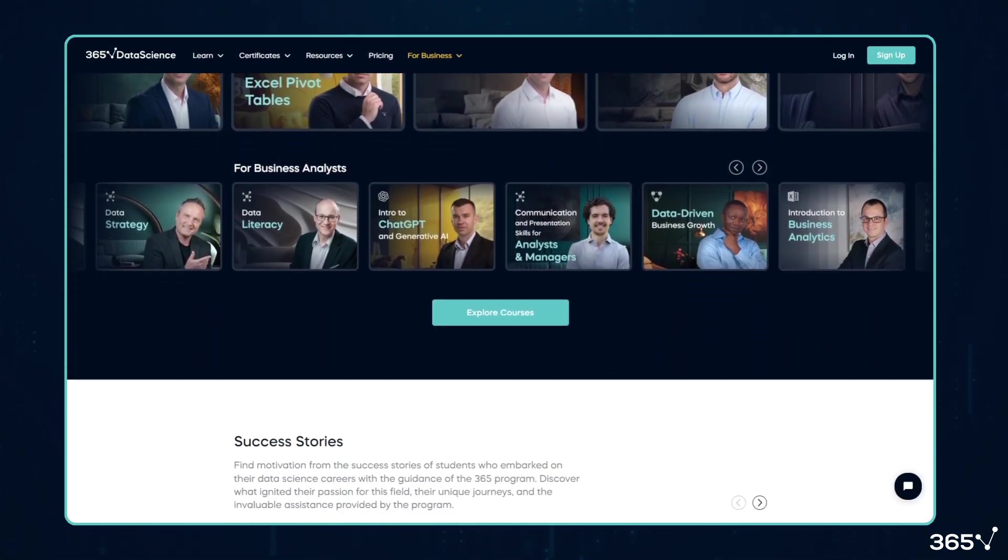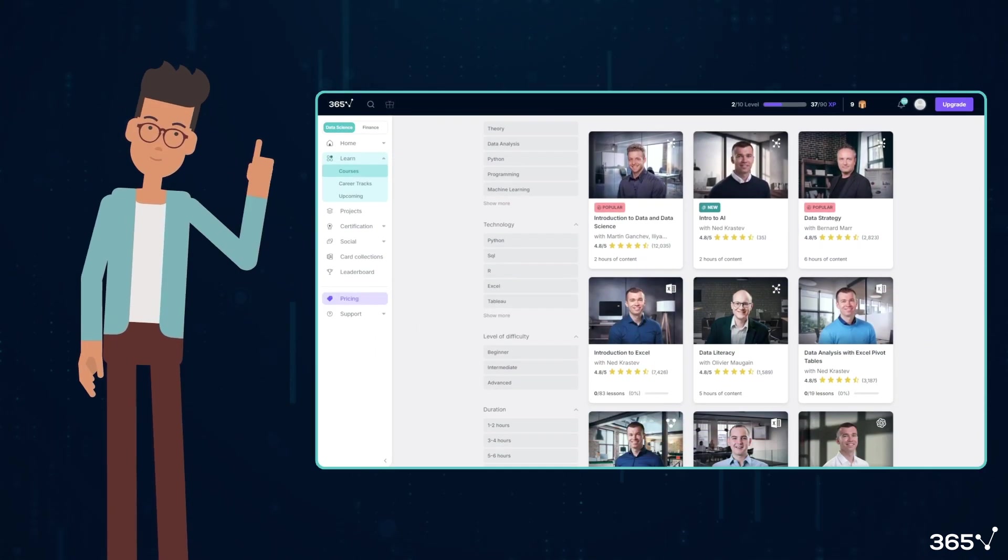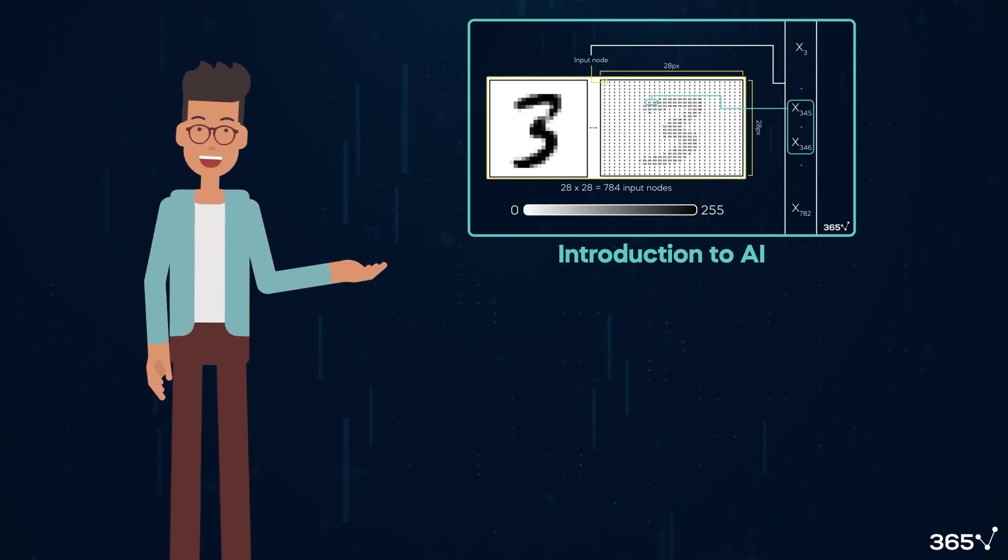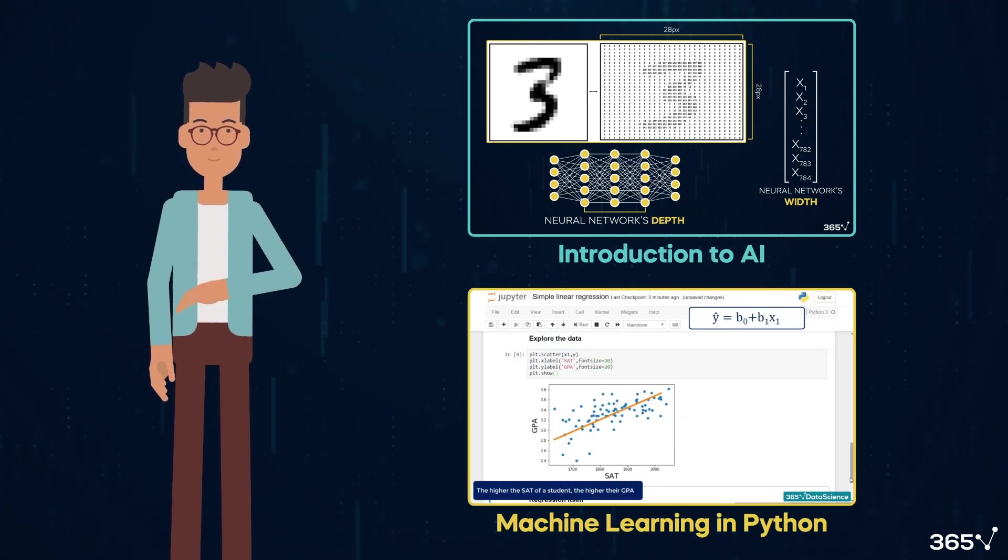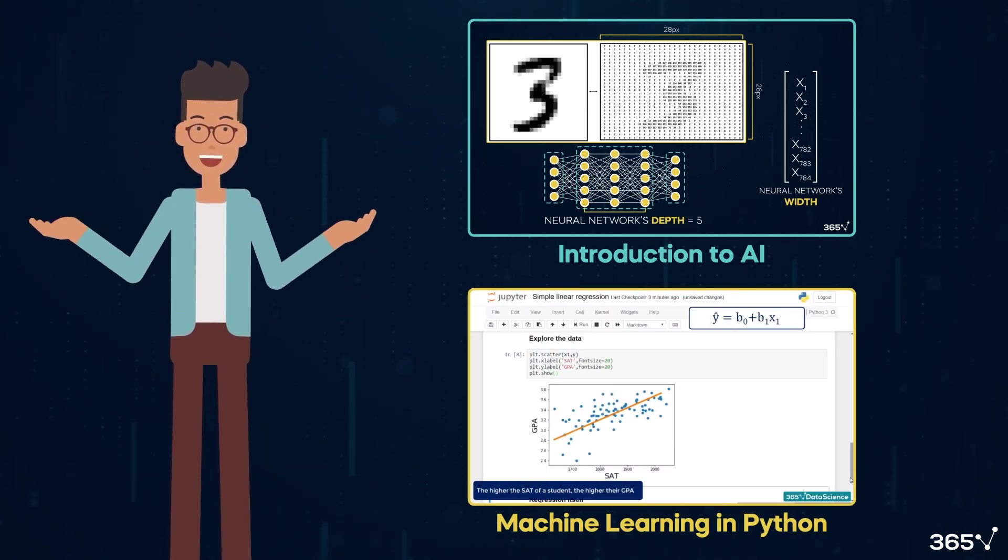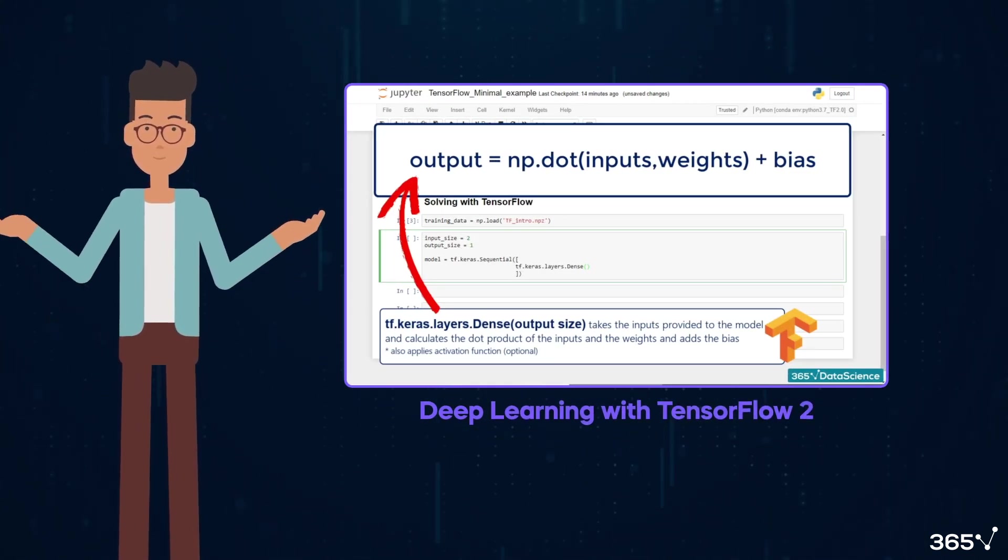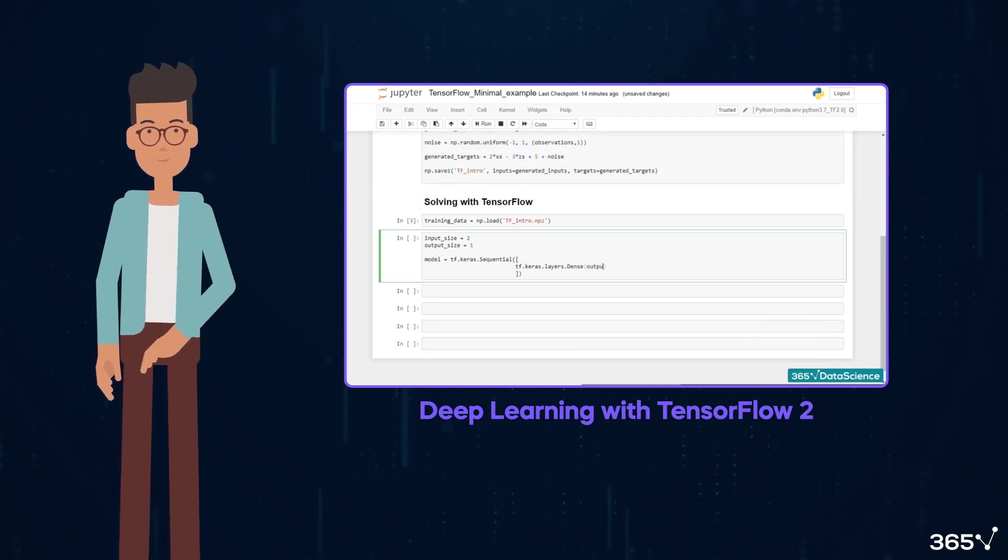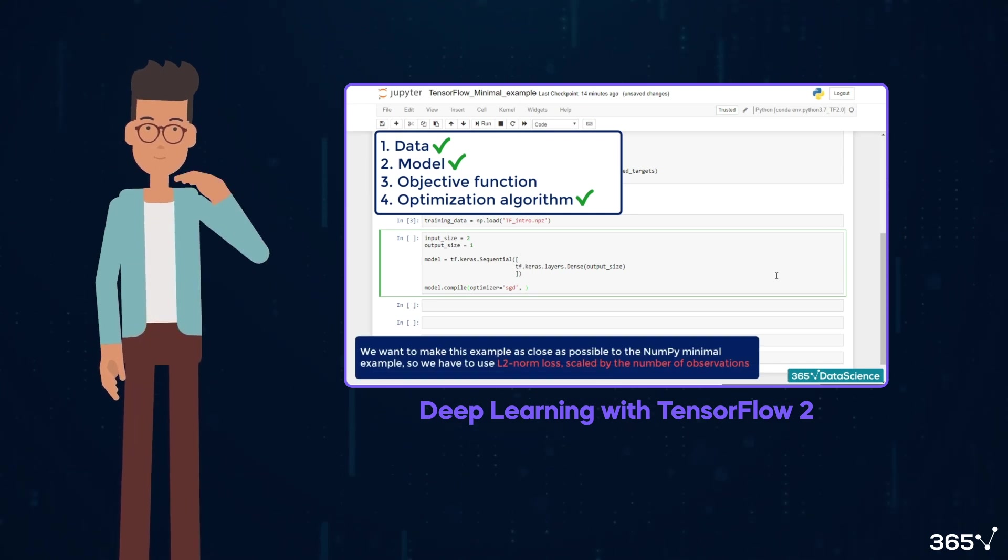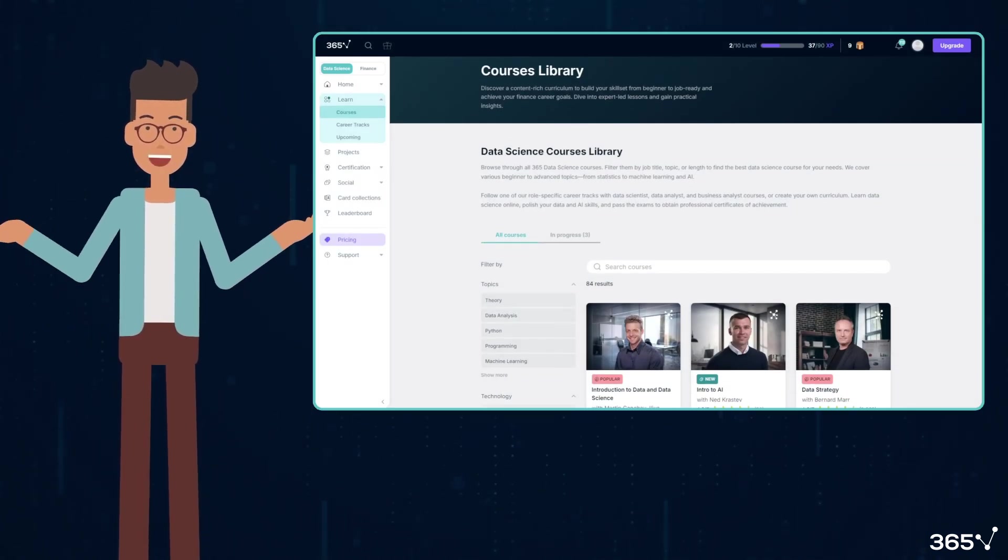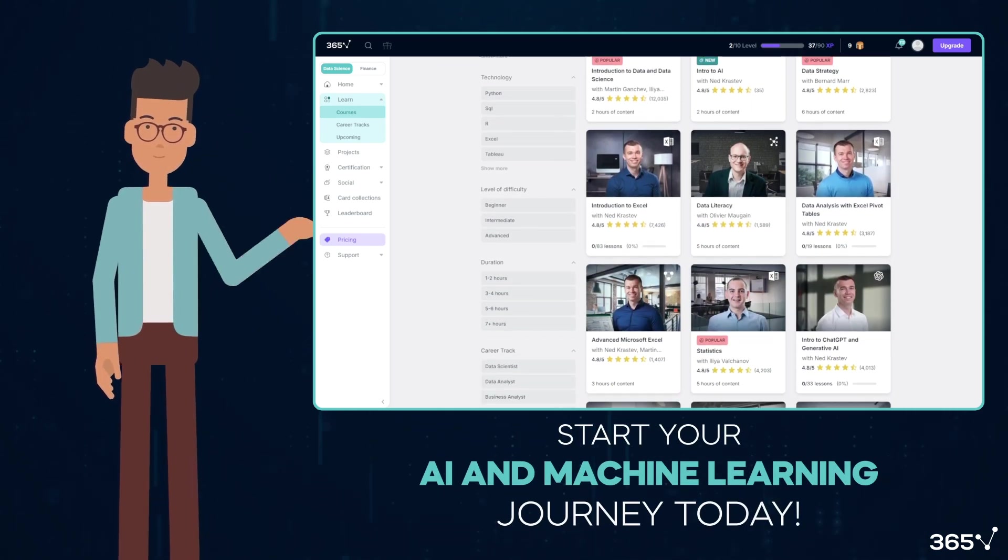I'd like to introduce you to 365 Data Science Learning Platform. If you're excited about AI and machine learning, we've got the perfect courses to get you started. Our Introduction to AI course provides a comprehensive overview of artificial intelligence, while our Machine Learning in Python course offers hands-on experience with popular ML libraries. For those interested in neural networks, our Deep Learning with TensorFlow 2 course teaches you how to apply neural networks to solve real-world data science challenges, providing practical experience with this cutting-edge technology. 365 Data Science has something for everyone. Explore our full range of courses and start your AI and machine learning journey today.